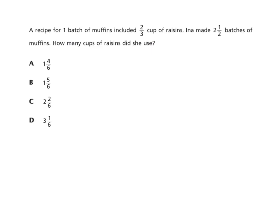A recipe for one batch of muffins included two-thirds of a cup of raisins. Ina made two and a half batches of muffins. How many cups of raisins did she use? If each batch uses two-thirds, we have two-thirds for one batch, two-thirds for a second, and one-half of two-thirds for the half batch. This is a repeated addition problem, so we multiply. Two-thirds times two and one-half — I'll change the mixed number to an improper fraction: two-thirds times five-halves.